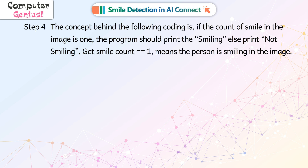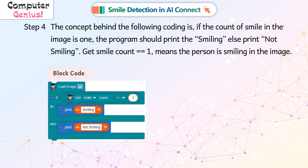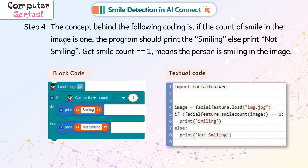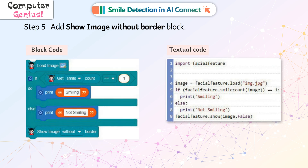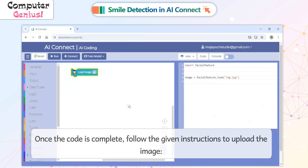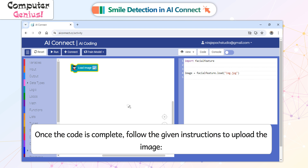Get smile count equal to 1 means the person is smiling in the image. Step 5. Add the show image without border block. Once the code is complete, follow the given instructions to upload the image.